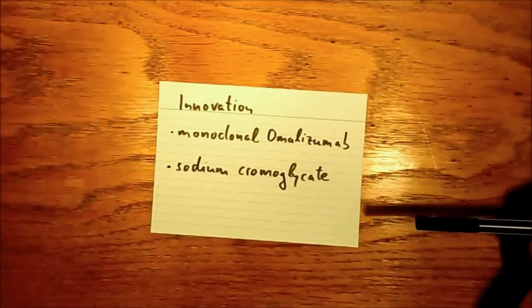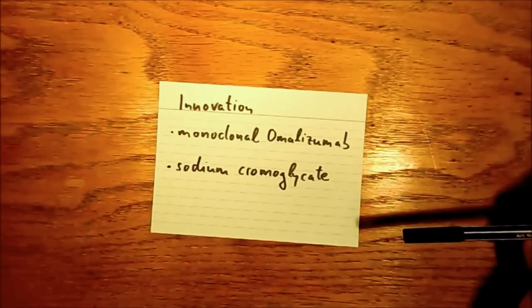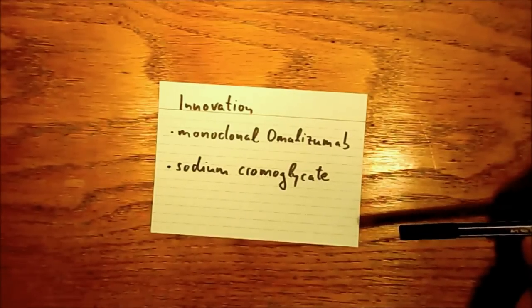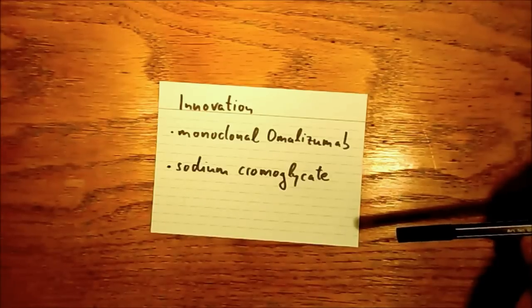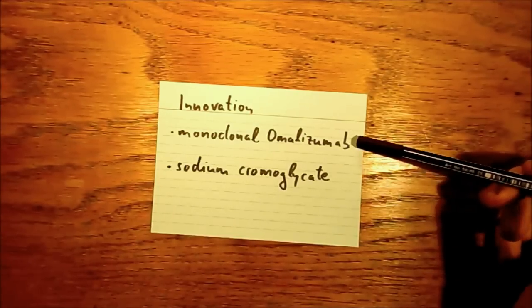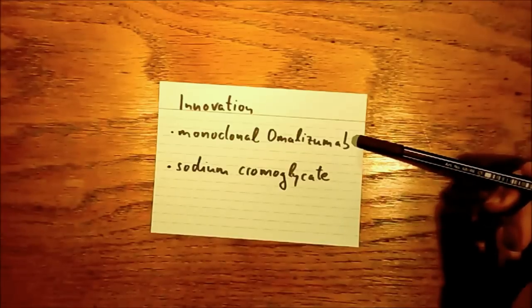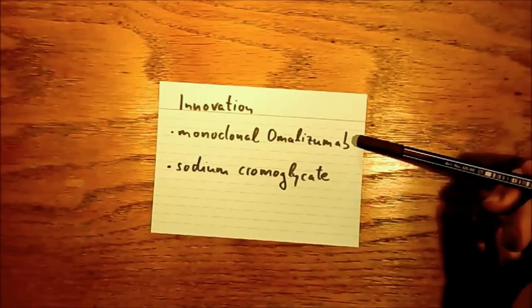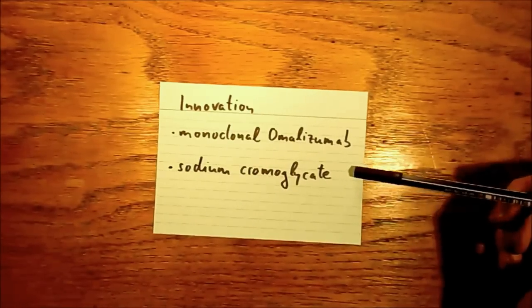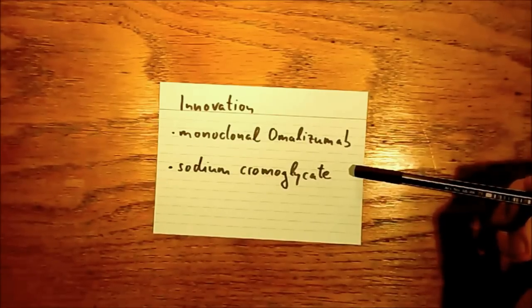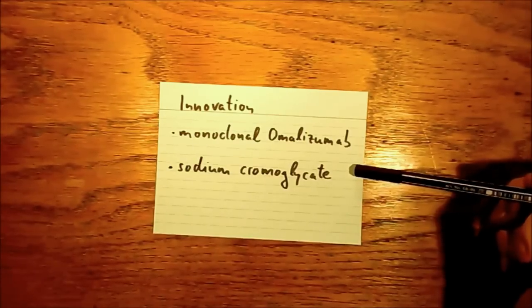As a lot of the allergic responses in anaphylaxis are closely related to allergic asthma, there's a lot of innovation going on in that area. For example, some monoclonal antibodies have been found to directly act on IgE and reduce the number of IgE and IgE receptors in the body. Sodium chromoglycate inactivates mast cells and basically renders them useless, which of course is also very interesting in this case.